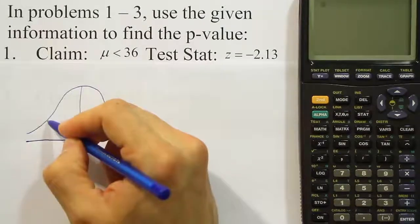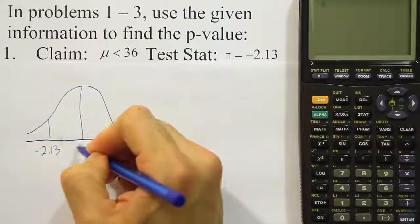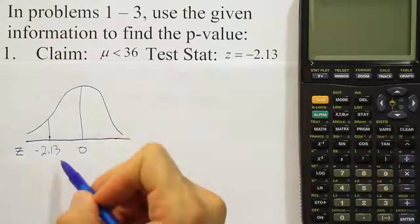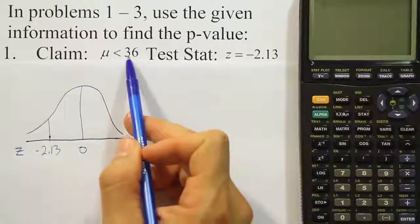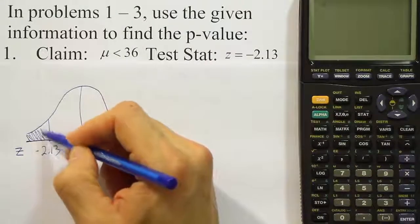Label our test stat over here somewhere on the left because it's negative. Remember, the center on a z-curve is zero. So a negative value would necessarily be on the left-hand side. And then, from there,